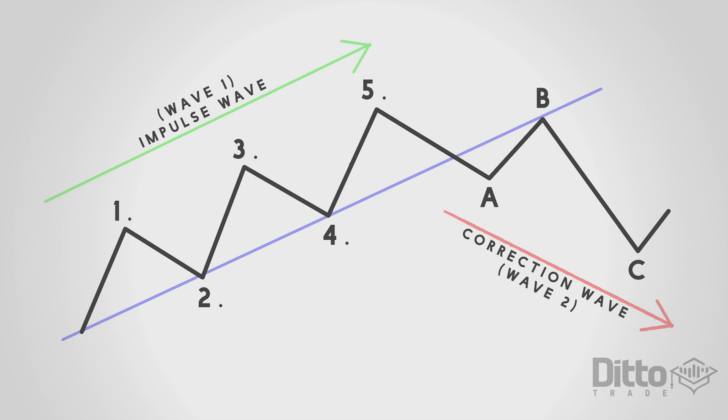So to summarize this information so far, waves are formed by the market movements. They are defined by their behavior. The entirety of an impulse wave and the correction wave together can form the beginning of a larger degree wave.